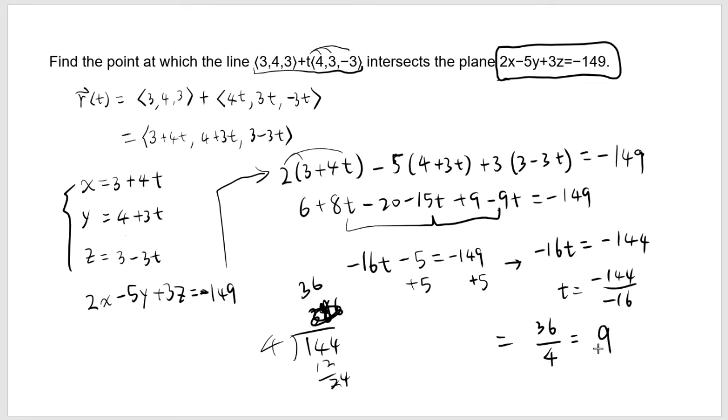But that's not the answer yet because we're looking for the point. What's the point? Point is x, y, z, right? So that means we have to find the value of this for t equals 9. So let's write the answer now. When t is 9, 9 times 4 is 36 plus 3, that's 39. 9 times 3, 27 plus 4 is 31. 9 times 3 is 27. 3 minus 27 is negative 24. So that's the answer. That's how you do it.